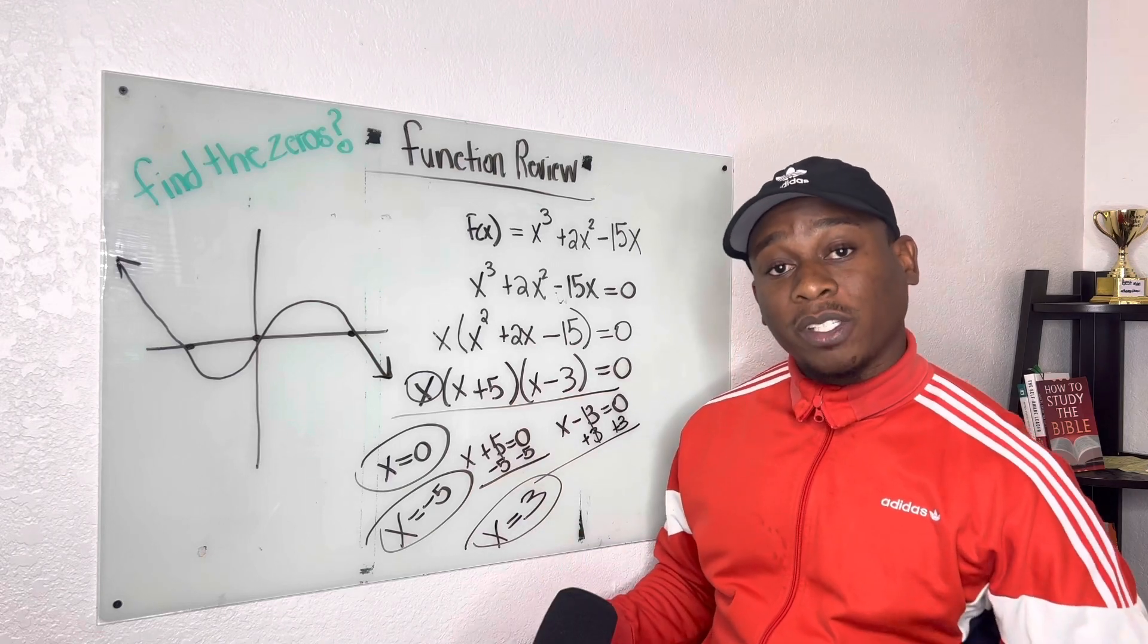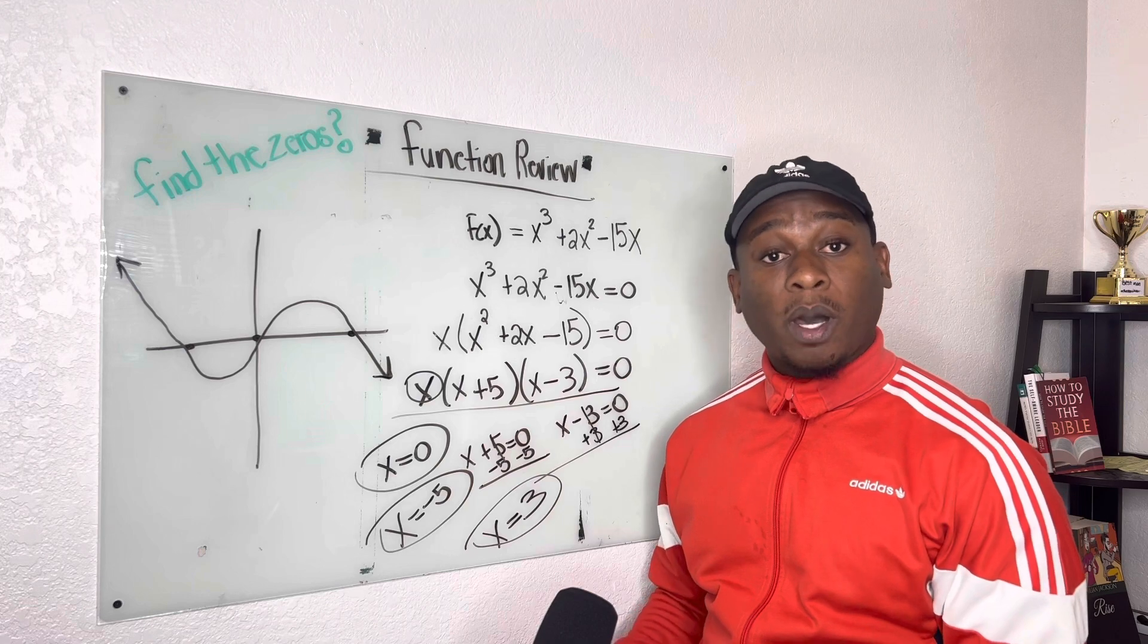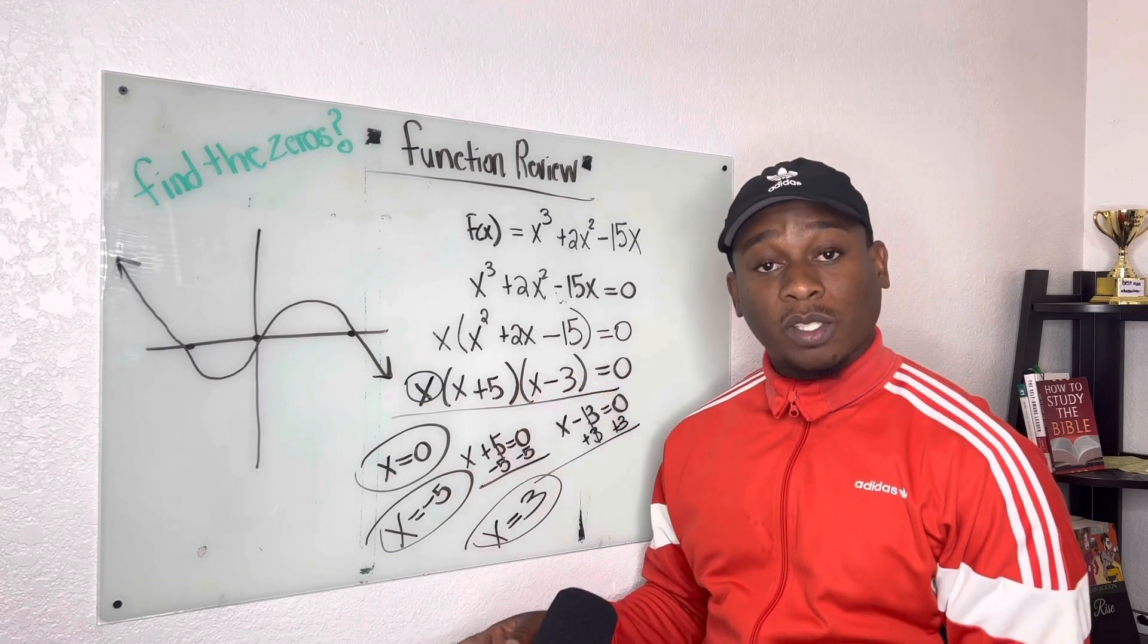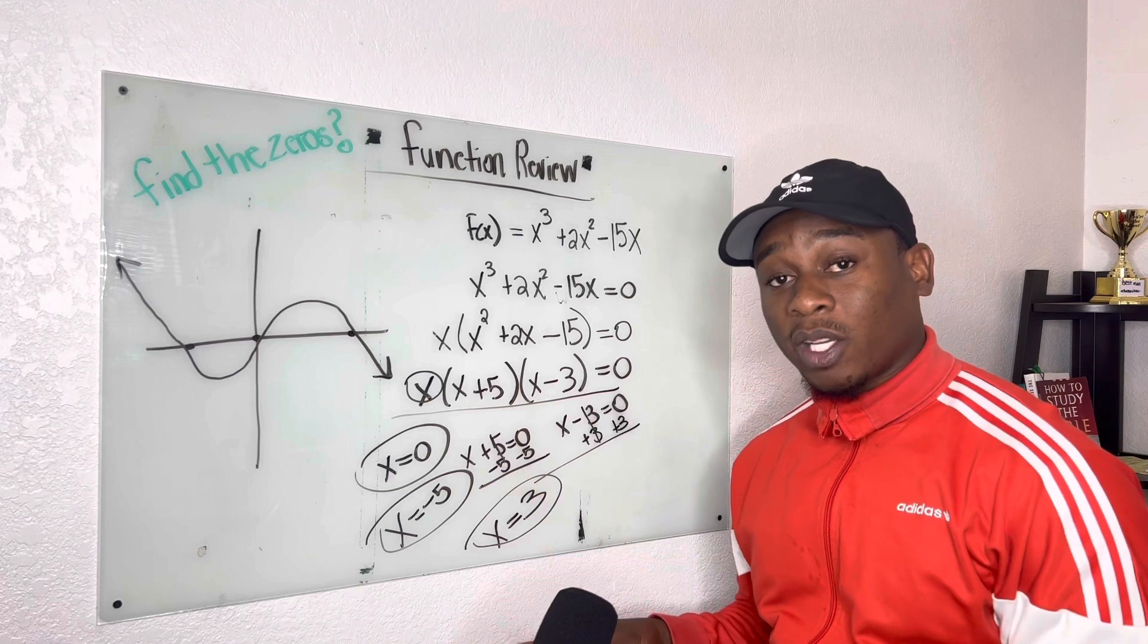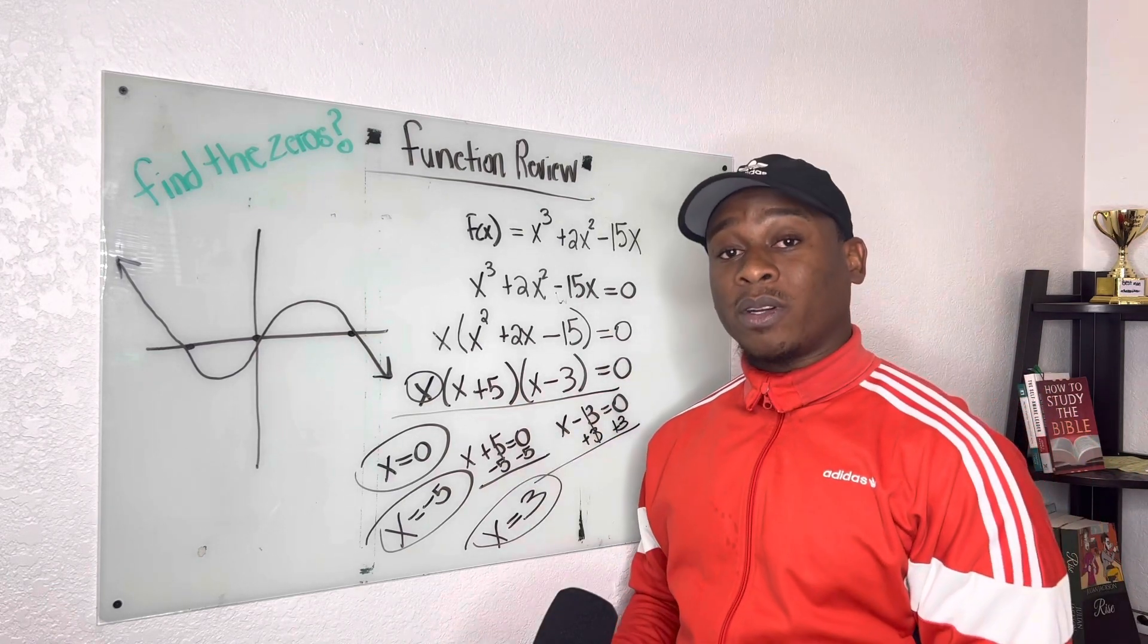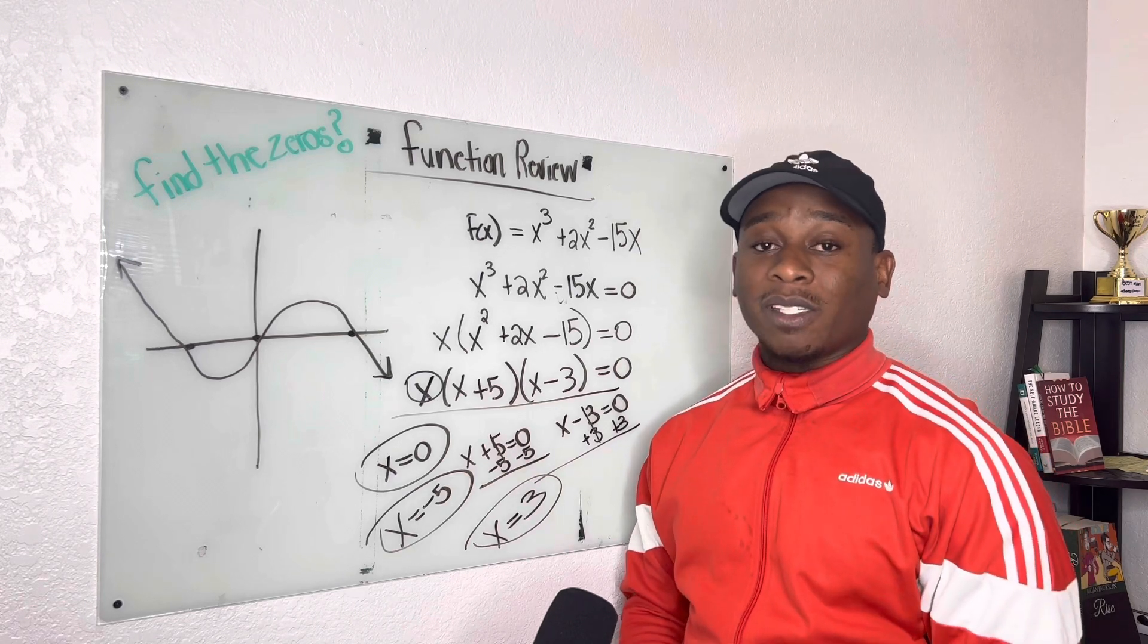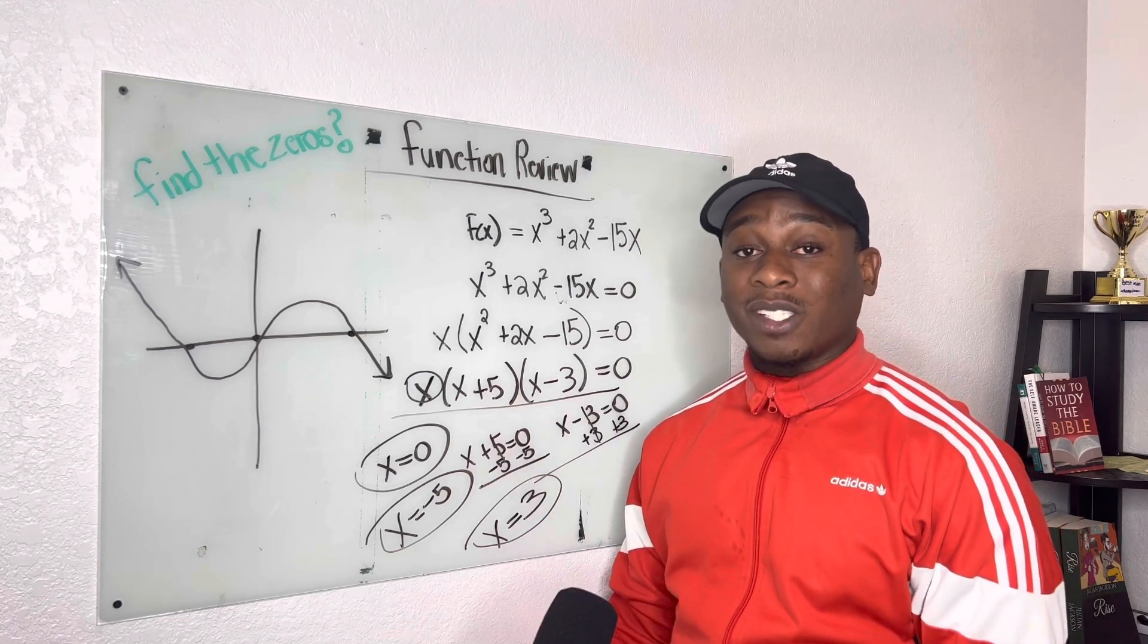So please, understand the difference when we're talking about finding the zeros for functions or polynomials. And we're talking about linear, which is the first power, quadratic, which is to the second power, or even cubic, which is to the third power. So hopefully, this was a very quick and helpful review for you guys on functions and how to find a solution slash roots.